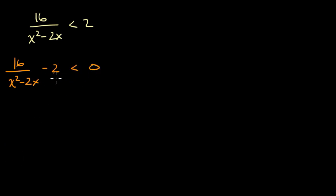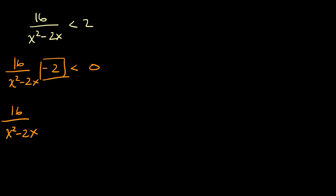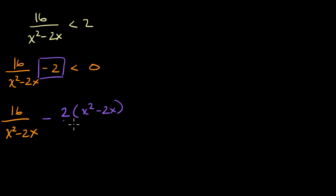Now I want to write it as just one big rational expression. So I'll rewrite the two: instead of subtracting just two, I'll write the equivalent of two, which is two times (x squared minus two x) over (x squared minus two x). All I did is find a common denominator. So now I can rewrite the entire thing with x squared minus two x in the denominator.